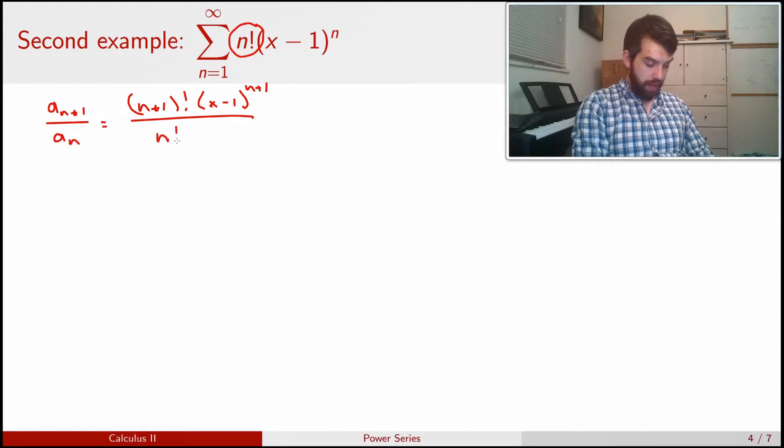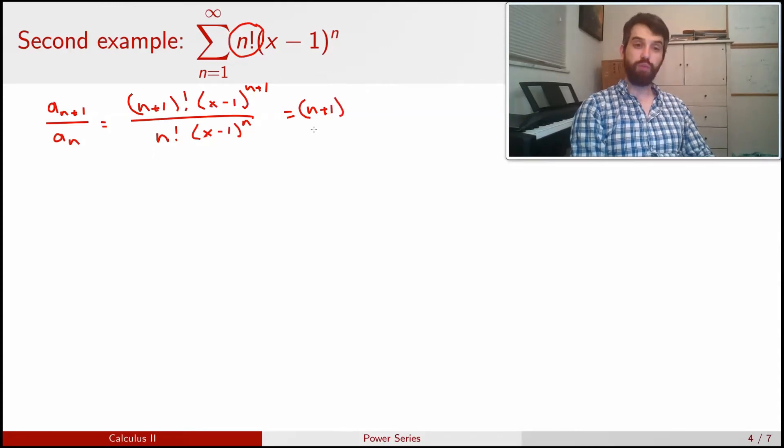The ratio of a_(n+1) divided by a_n is just (n + 1) factorial times (x - 1) all to the power of (n + 1), all divided out by n factorial divided by (x - 1) to the power of n. And then doing my cancellations, I have an (n + 1) remaining on the top. The (n + 1) factorial expands as (n + 1) times n factorial and then the n factorials cancel.